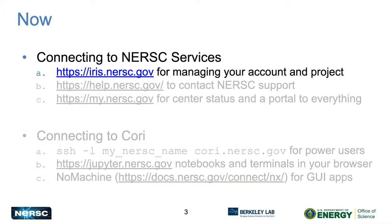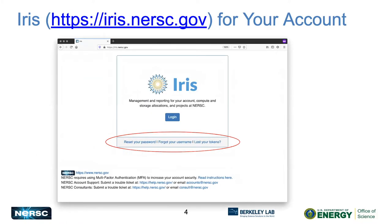Starting with IRIS — Quentin spoke about this just before. This is the first place you'll go when you get a new account, and a very important URL to remember: iris.nersc.gov. This highlighted section is very important if you have any trouble with your account. From here you can reset your password, get a reset link if you've forgotten your username using your institutional email, or recover if you've lost your MFA tokens.